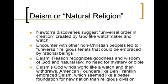As we continue into the Industrial Revolution we look back at this sense of a Great Awakening, where we look at a natural religion or deism. Newton's discovery suggests that there must be a universal order in creation, created by God like a watchmaker and a watch. Our encounter with other non-Christian peoples through colonization also leads to a universal religious tenet that could be embraced by rational beings — that everybody has a religious tenet underneath a Christian and non-Christian umbrella. That leads to the idea of deism, where reason recognizes the goodness and wisdom of God and there is a sense of natural law between all. There's no need for mystery or maybe even the Bible. Deism's God winds the world like a watch and then withdraws. American founders like Ben Franklin would embrace this sense of deism, which seemed like a better foundation for a new nation than religious division among several colonies led by several different religious backgrounds.